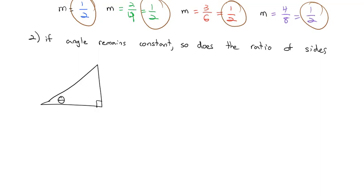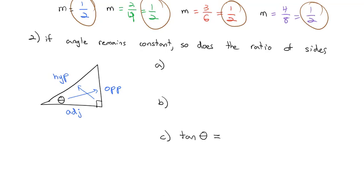Let's give each side a name. Going across the triangle, we call that the opposite side, because it's opposite from the angle. The side right next to the angle — between the angle we're talking about and the right angle — we call the adjacent side. The one across from the right angle, we call the hypotenuse. There are three ratios of sides we're going to talk about. The third one is called the tangent of angle theta. The tangent is the slope — rise over run — which in this triangle is opposite over adjacent.